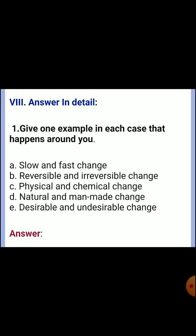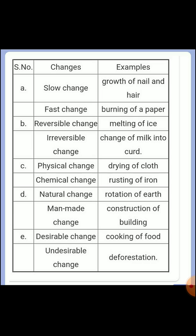Eighth section — answer in detail. Give one example in each case of changes that happen around you, presented in a tabular column. A) Slow change: growth of nails and hair. Fast change: burning of paper. B) Reversible change: melting of ice. Irreversible change: change of milk into curd. C) Physical change: drying of cloth. Chemical change: rusting of iron. D) Natural change: rotation of the earth. Man-made change: construction of a building. E) Desirable change: cooking of food. Undesirable change: deforestation.